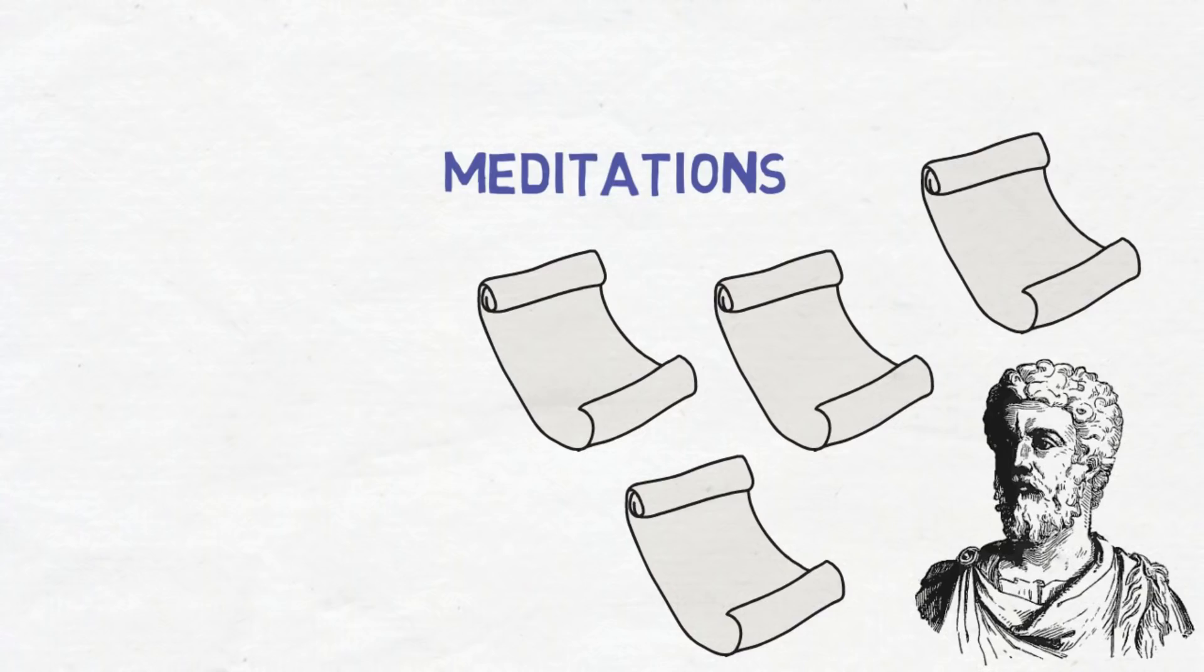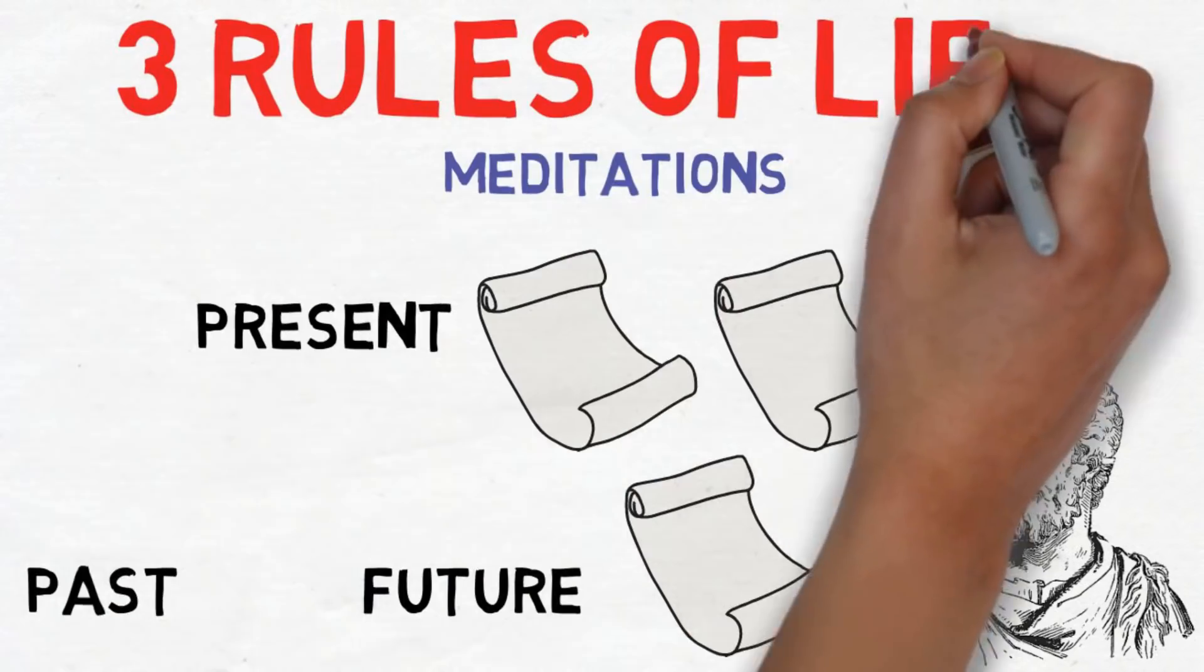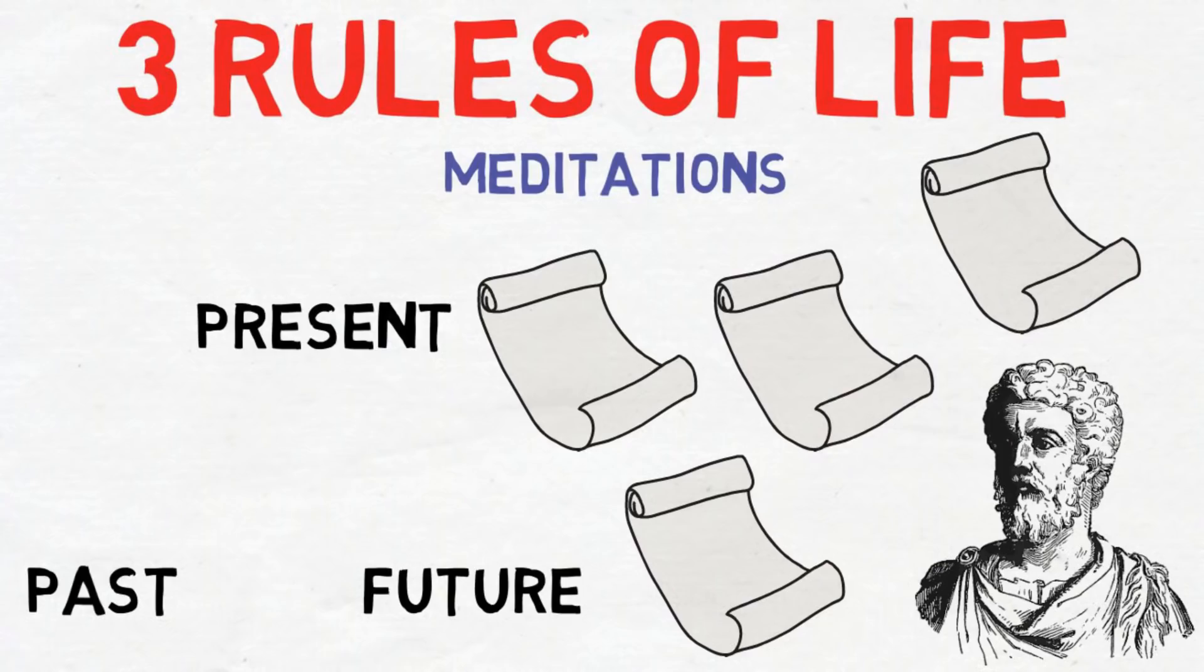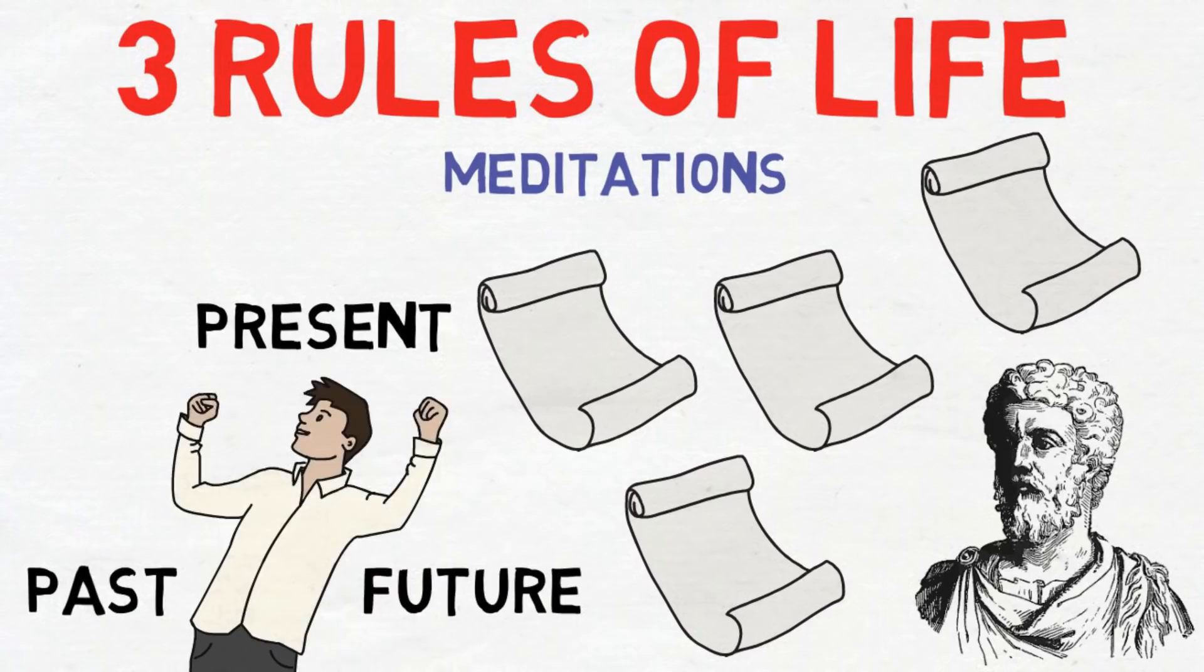While the Meditations was never intended for publication, it remains in print to this day and is perhaps as popular as ever. The journal shows that the most powerful man on the planet was going through the same problems that we deal with today, and indeed the same problems we will be grappling with tomorrow. So join us now as we examine the three rules of life that Marcus Aurelius thought were of the utmost importance to living a good life, and how we can adapt them to work with our modern day lives.